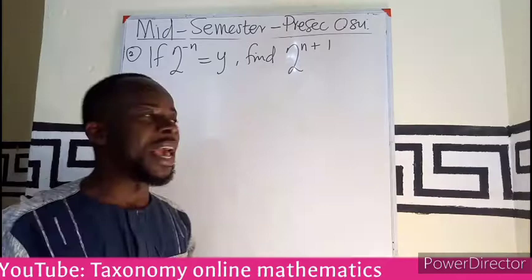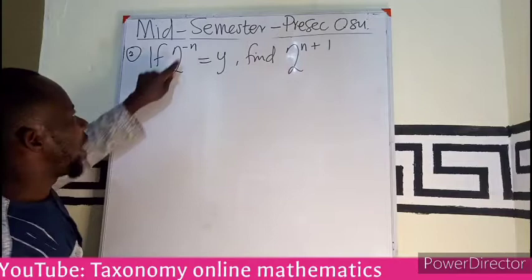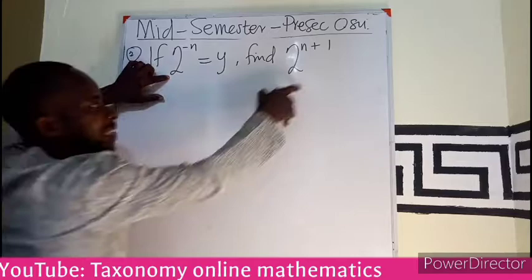So now you can see that 2 exponent minus n is not having anything here the same. There is no minus sign here, but you can see that 2 exponent n is here. So it means I have to rewrite this so that I can get something of this from this expression equal to y.